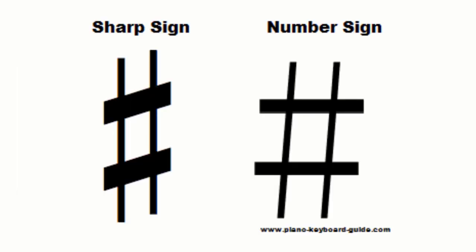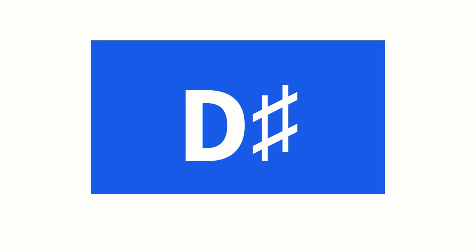Usually, a hashtag, pound, or number sign is used to represent the sharp sign when typing or writing. For instance, instead of writing D sharp like this, you can simply type this.